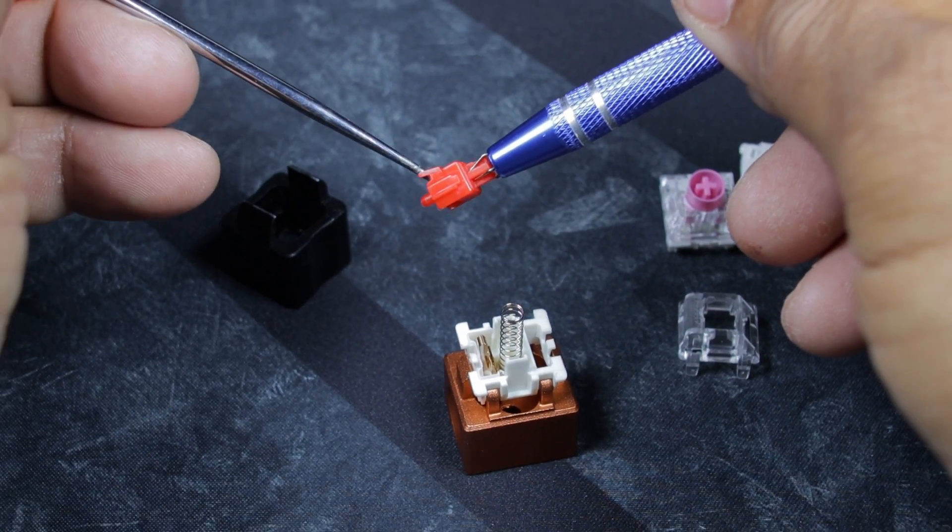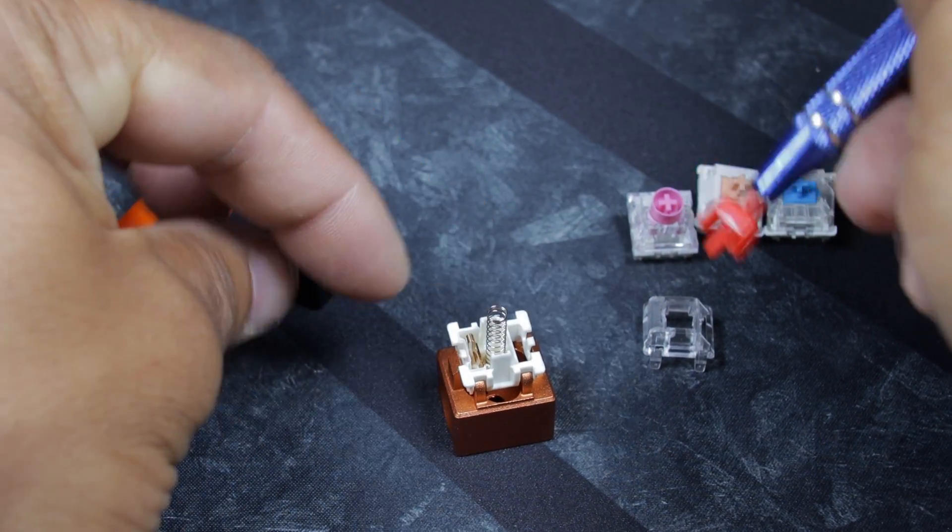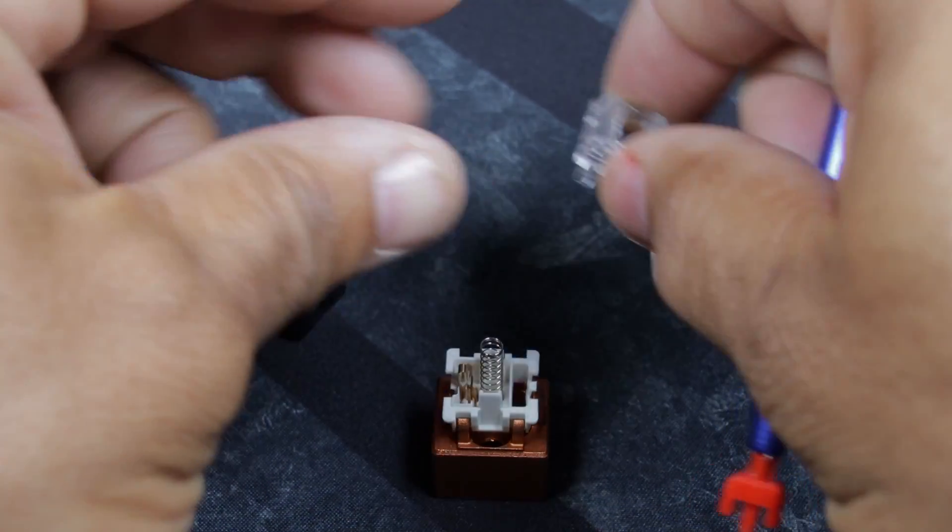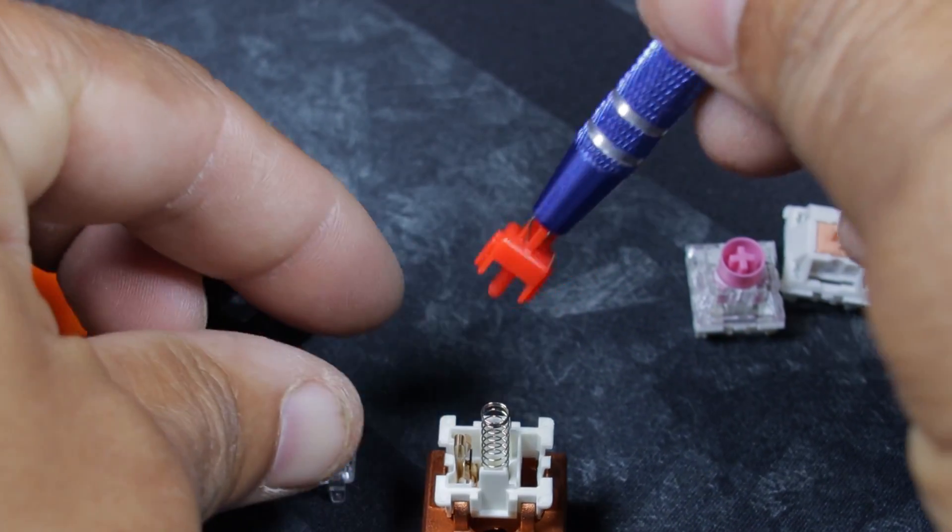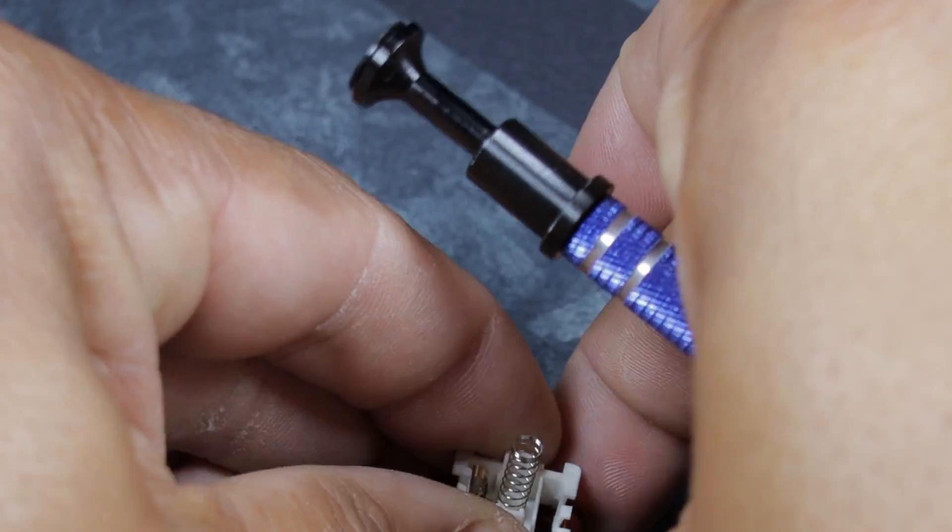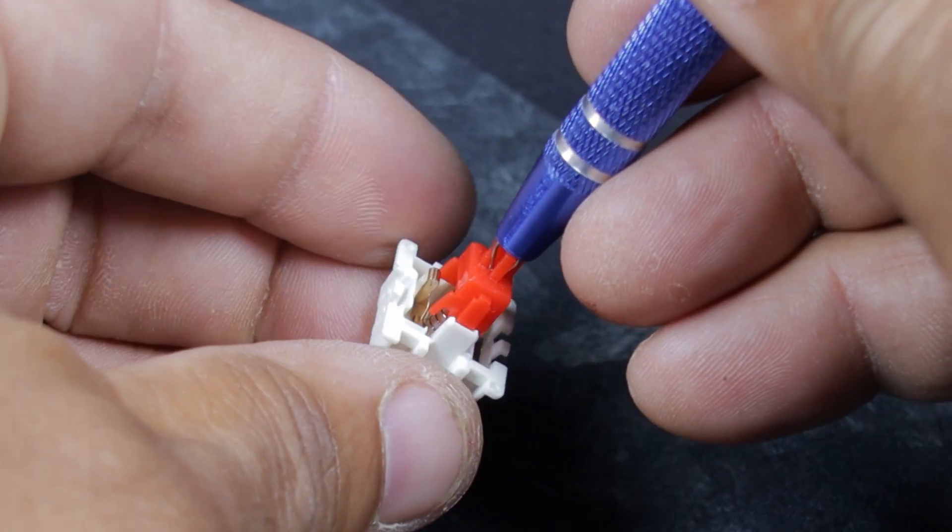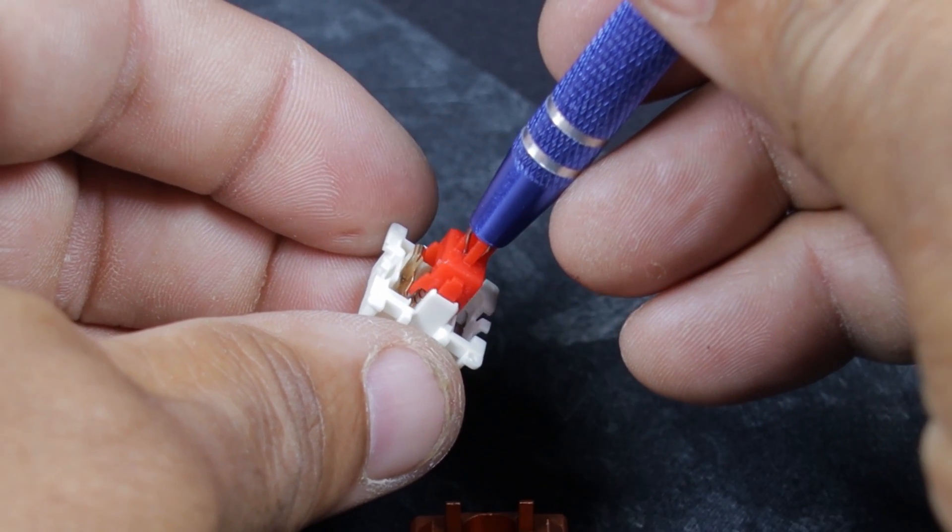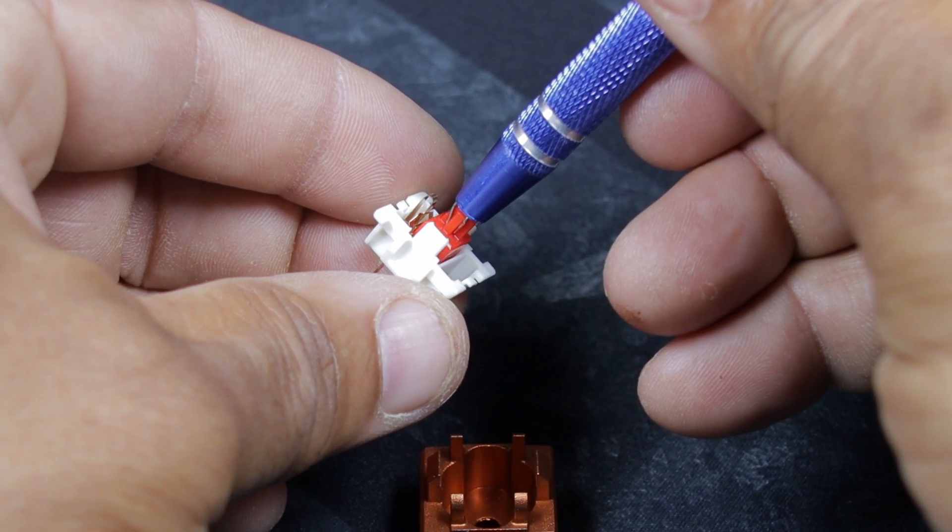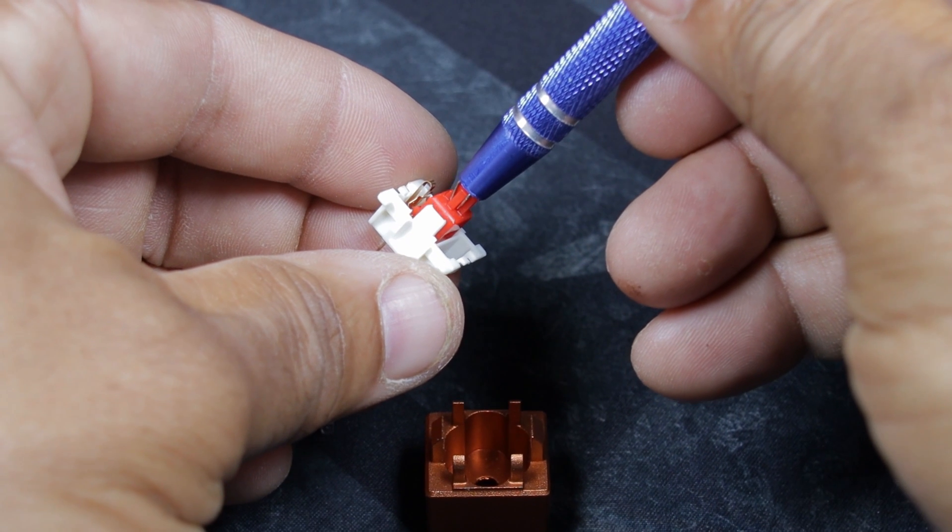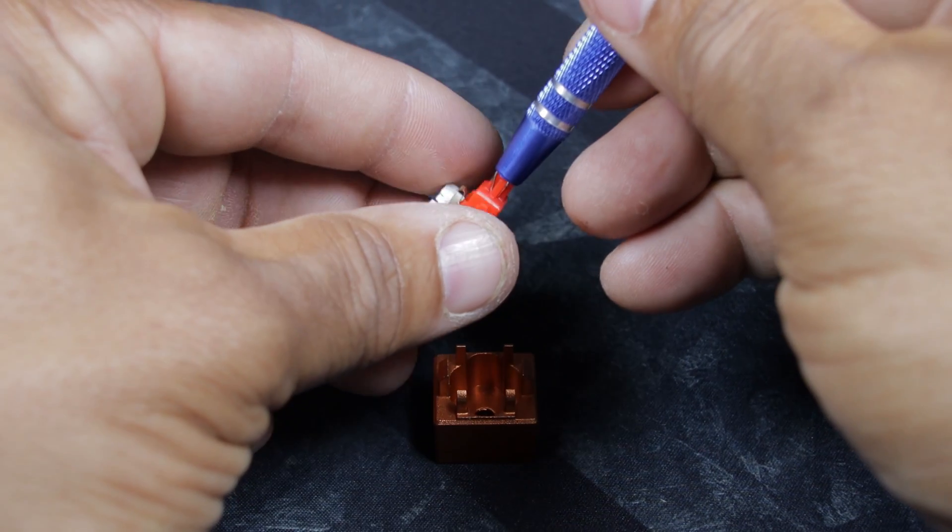This is the stem, those are the legs. The legs are what affects what style of switch it is. Then you have the spring, bottom housing, top housing. Some are clear, some are opaque, depends on how much LED you want. This rides on these leaves here that make the contact, and since it's a linear it's just a straight shot. The pressure never changes start to finish, that's linear.